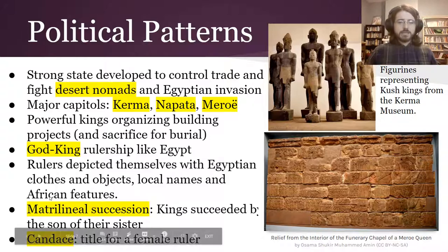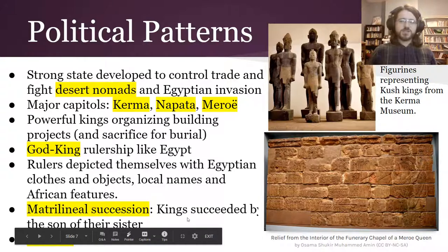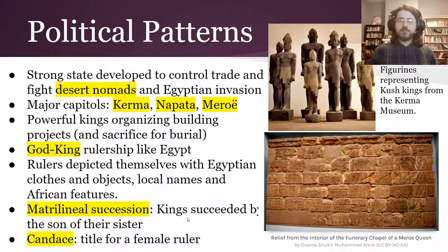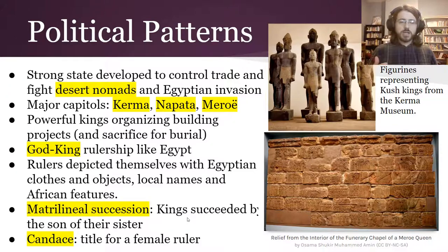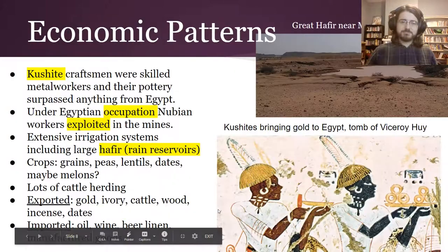Differently, they had matrilineal succession — 'matra' meaning mother, so through a mother. Kings were succeeded by the son of their sister, which is really fascinating, and indicates that women likely had a different level of power in society. In fact, from Meroe, a later kingdom, we have a specific title for a female ruler: Kandake.